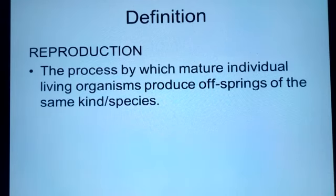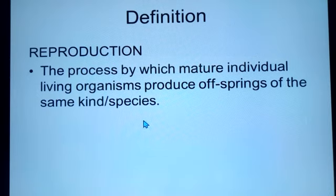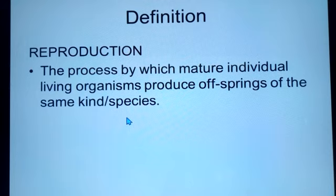This is when we talk of the topic reproduction. If we go quickly through the introduction, we must first define the term reproduction, which simply means the process by which mature — underline the word mature — individuals or living organisms produce offspring or organisms of the same kind or species. Organisms that belong to the same species are able to reproduce because they can give forth an offspring of the same kind, which is fertile.